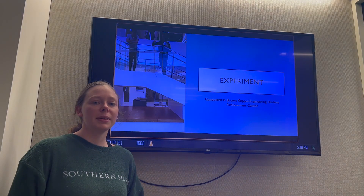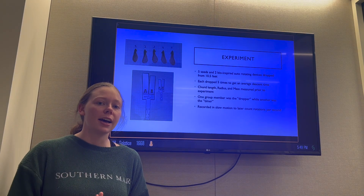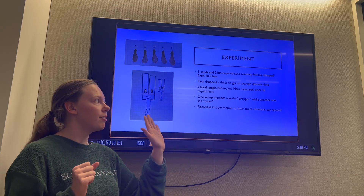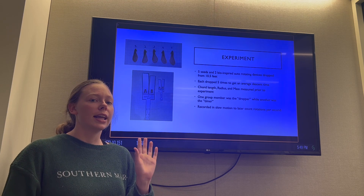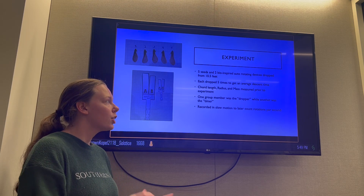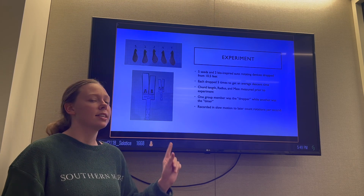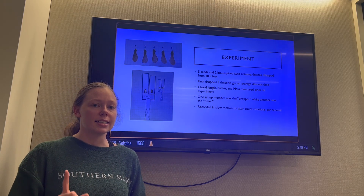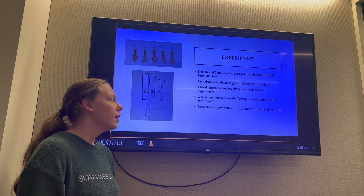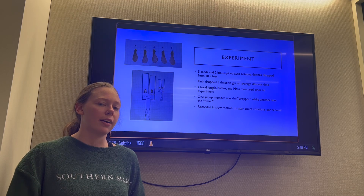Hi, my name is Chloe Forbes, and I will be discussing the experiment and experimental data. We did our experiment in the Brown-Copel Student Achievement Center, where we dropped five seeds and two bio-inspired autorotating devices from a height of ten and a half feet. Before the experiment, we took chord length and radius with electronic calipers and measured mass inside a closed scale to dissipate outside effects. One group member was the dropper and another was the timer to keep results as consistent as possible. We recorded every single drop in slow motion so we could count rotations per second to calculate angular velocity.